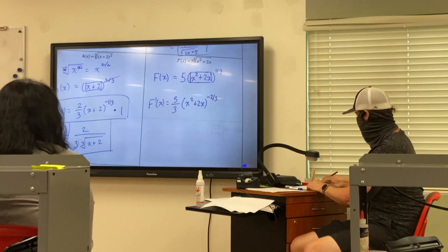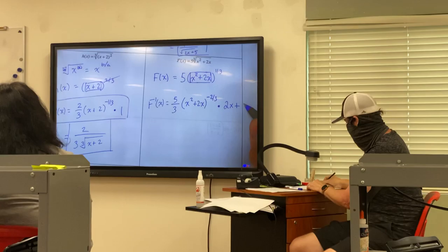Negative two-thirds, perfect. Now this is where it's going to get tricky. I'm going to make a mistake here. I want you guys to see if you can catch it. Times 2x plus 2.